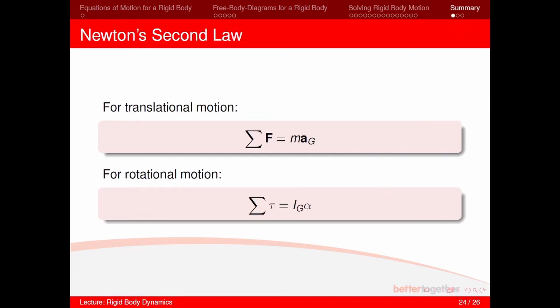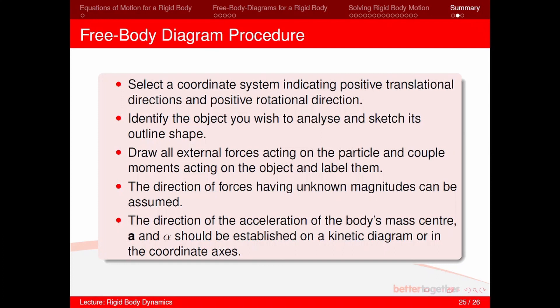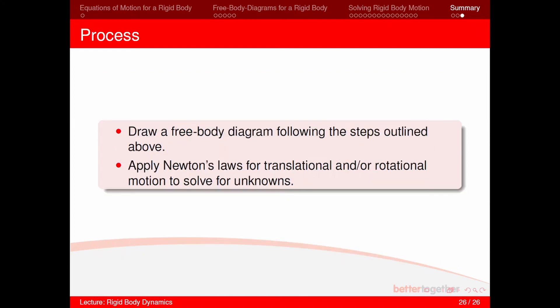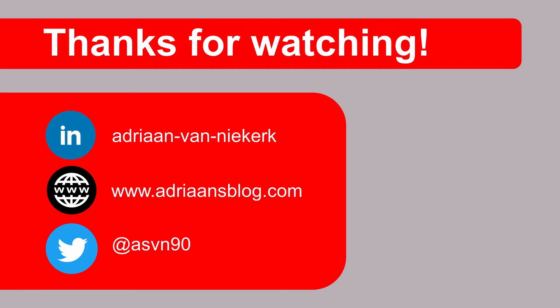In summary, when analyzing rigid body dynamics, we always use Newton's second law for both translational and rotational motion. We must first draw a free body diagram, selecting a coordinate system indicating positive translational and rotational directions, identifying the object, sketching its outline, and drawing all external forces, couple moments, and labels. The direction of forces with unknown magnitudes can be assumed, as it will be determined when solving. The directions of acceleration of the body's mass center A and angular acceleration alpha should be established on a kinetic diagram. After drawing the free body diagram, we apply Newton's second law for translational and rotational motion to solve all the unknowns. Thank you for watching, and I'll see you in the next video.